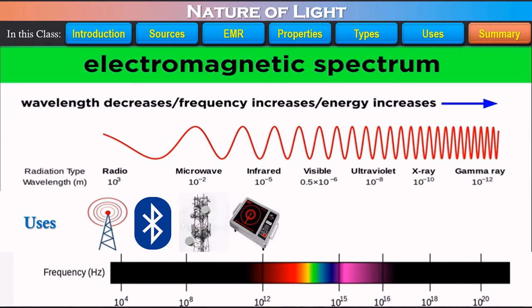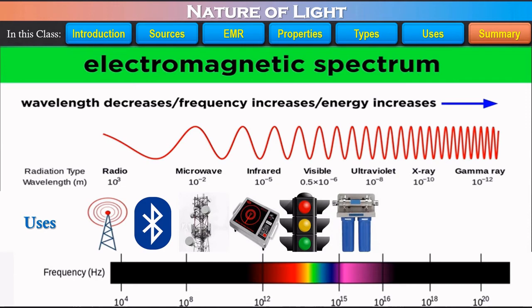Next, we have the visible light region which makes the world visible to us. Radio waves to visible light are very low energy radiation which are safe even after a prolonged use. Ultraviolet radiation used in medical industry and water purification.